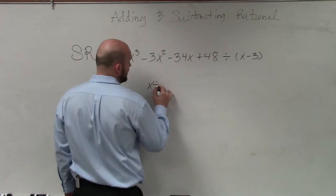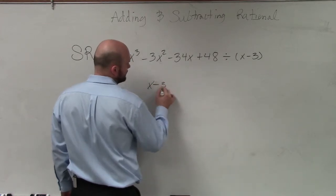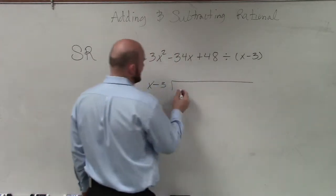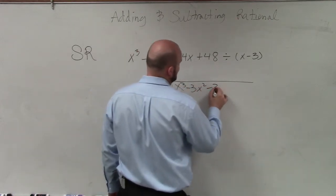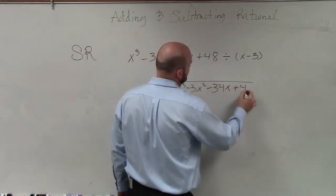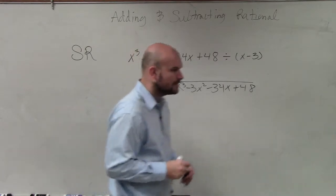So I'm going to write this as x minus 3 divides into x cubed minus 3x squared minus 34x plus 48. I did that.